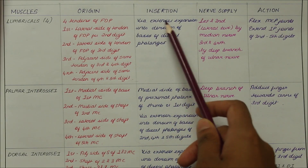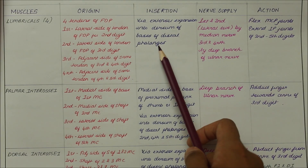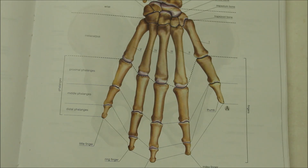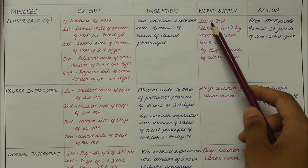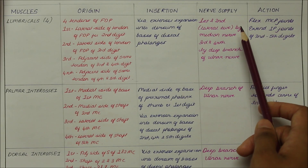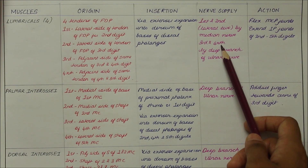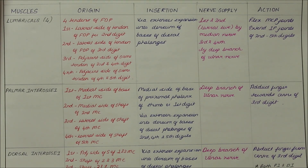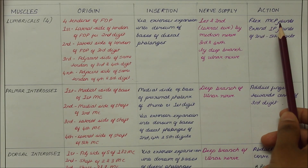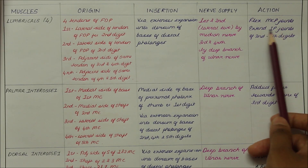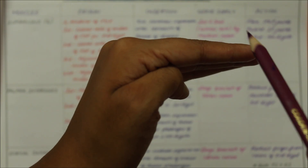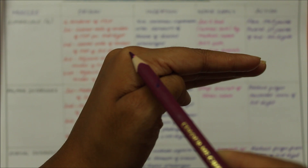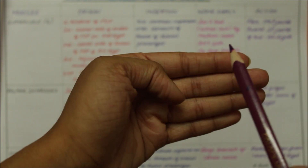The lumbricals insert via the extensor expansion into the dorsum of the base of the distal phalanges. The first and second lumbricals are supplied by the median nerve, while the third and fourth are supplied by the deep branch of the ulnar nerve. Their action is flexion of the metacarpophalangeal joints and extension of the interphalangeal joints of the second to fifth digits — resembling the letter L for lumbricals.